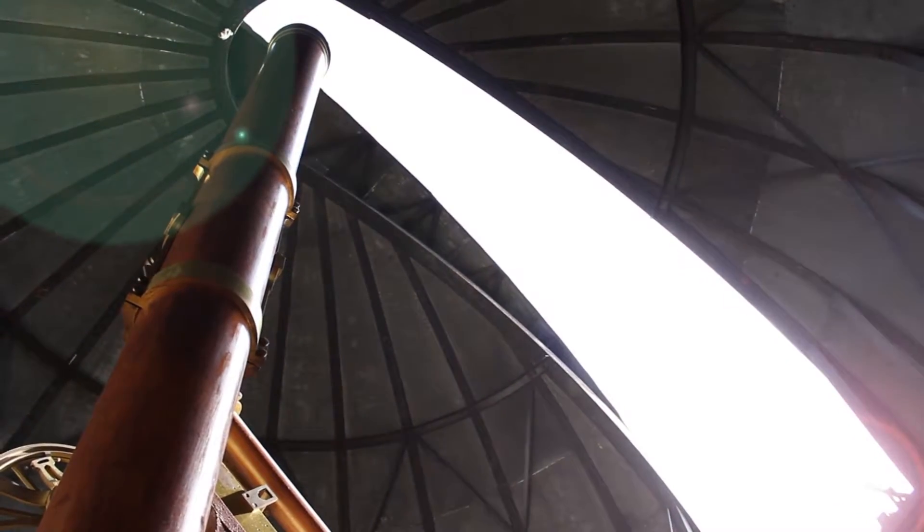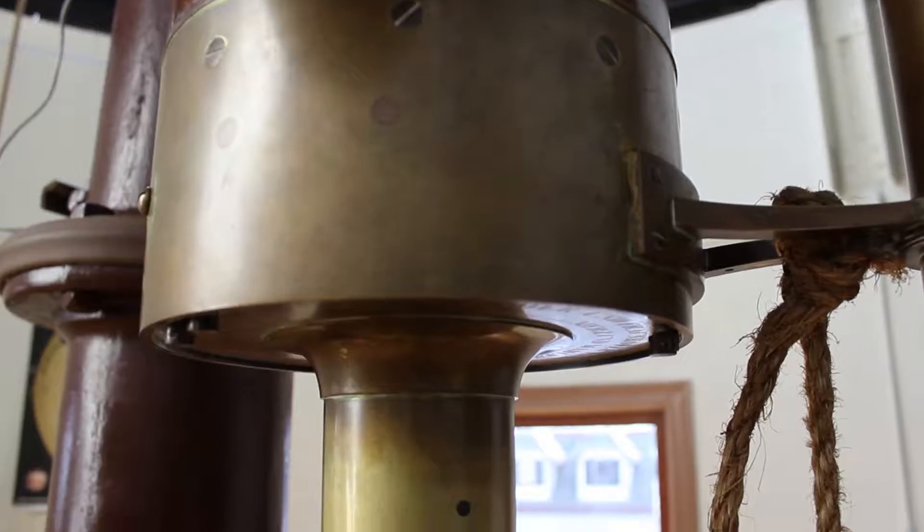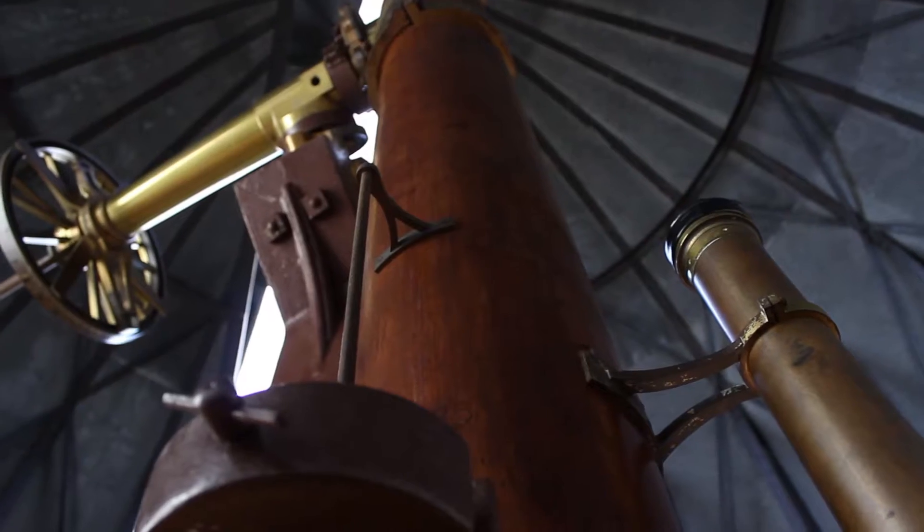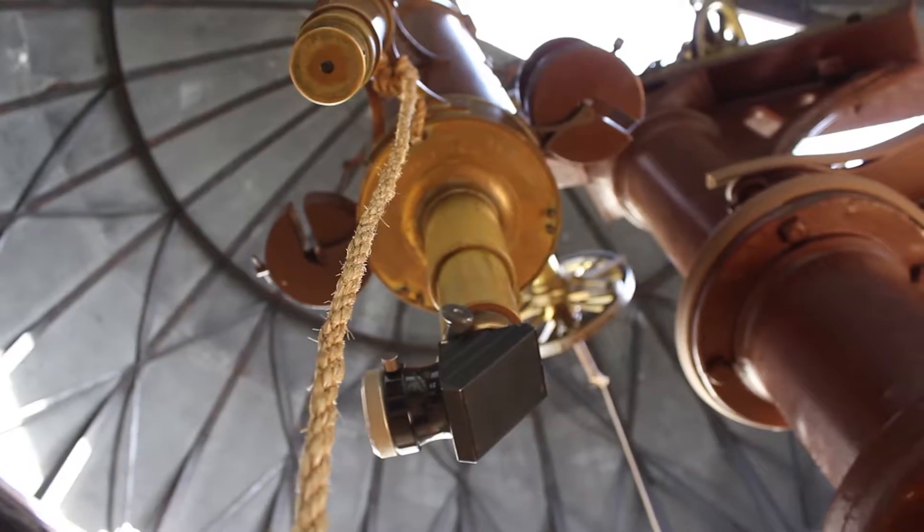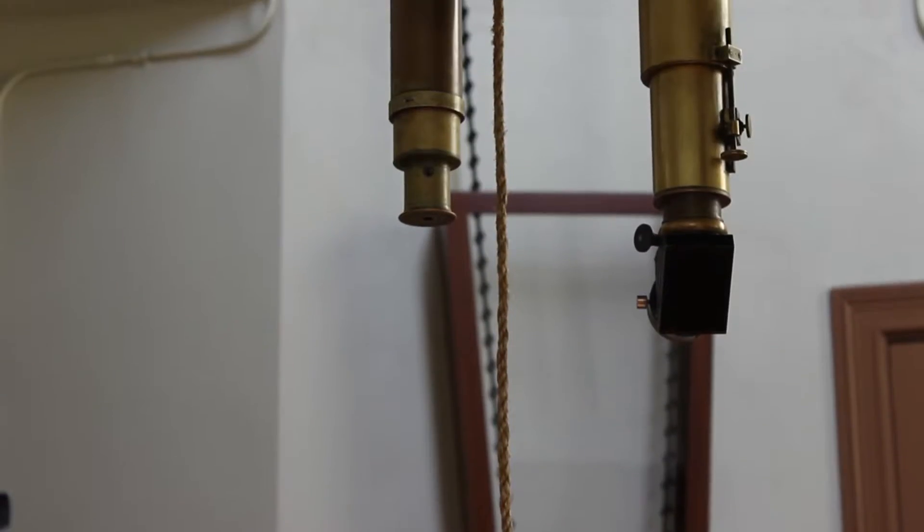Our pride and joy is the older telescope. This was made in 1843 in Munich, Germany and was shipped over to Cincinnati in 1845. It's one of the oldest telescopes in the world and you can actually look through it.